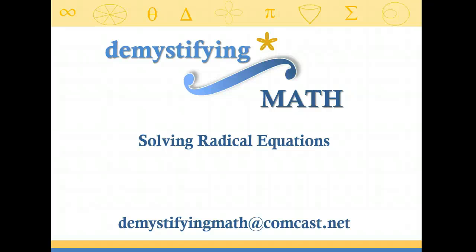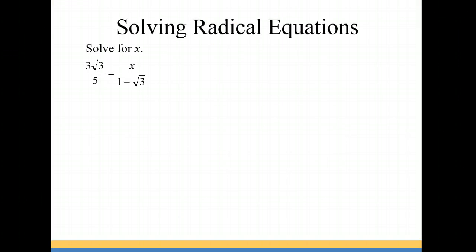Welcome to Demystifying Math. In this lesson we're going to be solving equations that involve radicals. We're going to start with 3√3 over 5 equal to x over 1 minus √3. For our first step we're going to cross multiply.